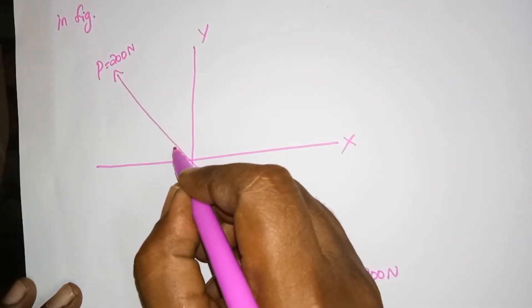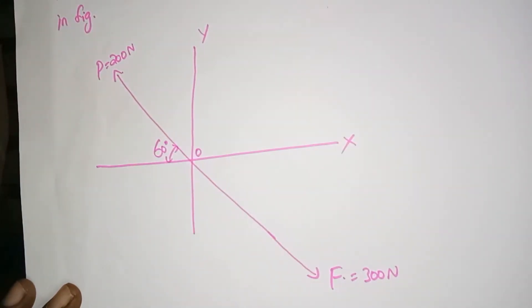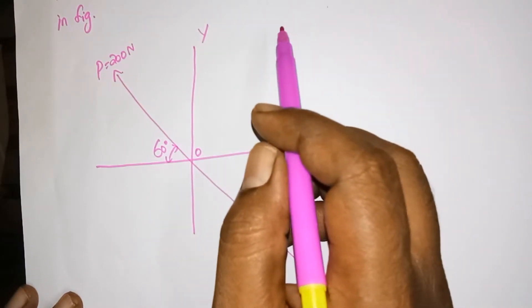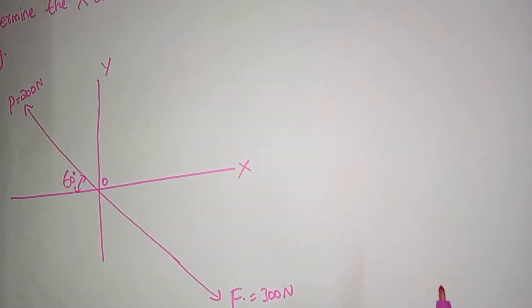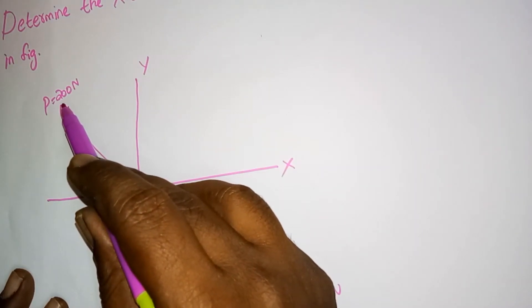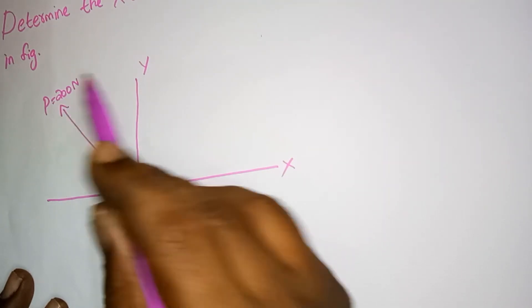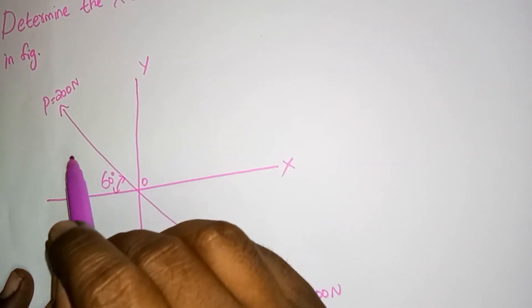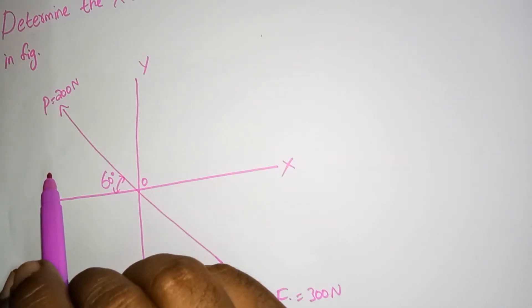The angle is given — this angle is 60 degrees. Now we will start the solution part. Since P is directed upwards to the left, its components act in these directions as shown here. With respect to the positive directions of the reference axis, the sign of Py is positive and Px is minus.